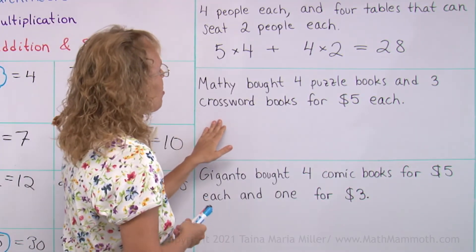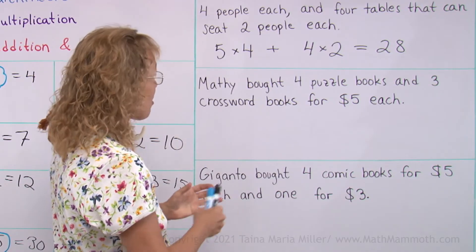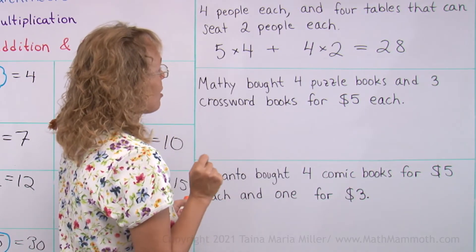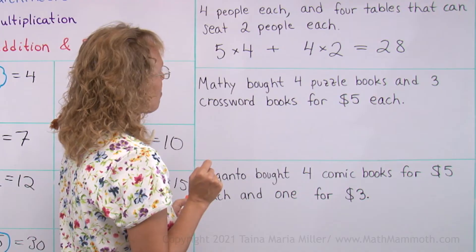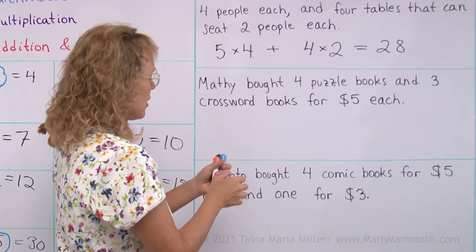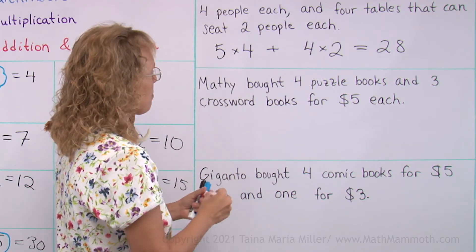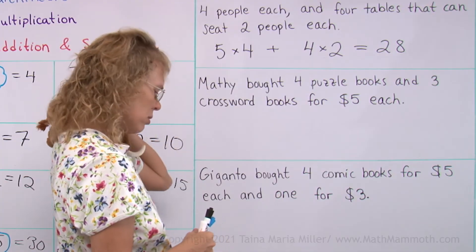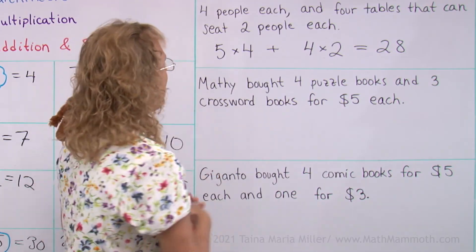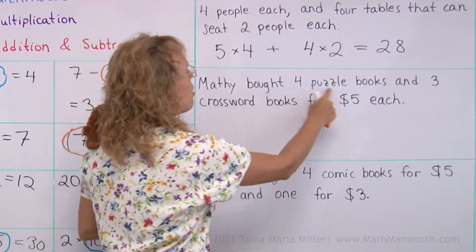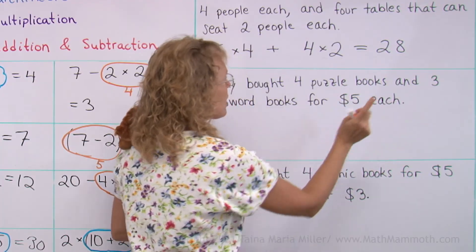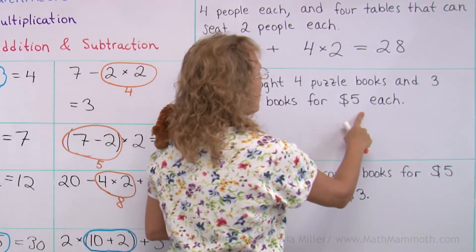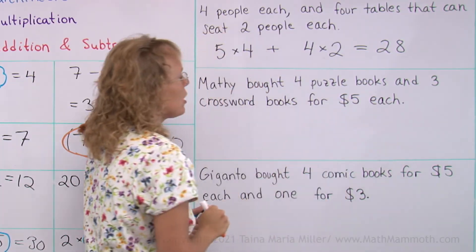Matthew bought 4 puzzle books and then 3 crossword books for $5 each. Is it meaning that the puzzle books cost $5 too? Yes — Matthew bought 4 puzzle books for $5 and also 3 crossword puzzle books for $5 each too.